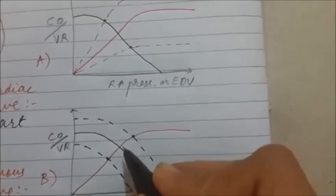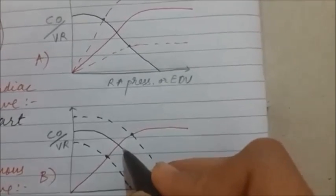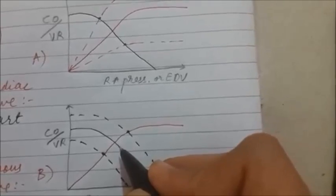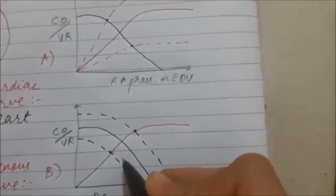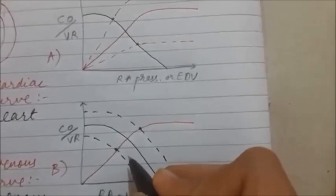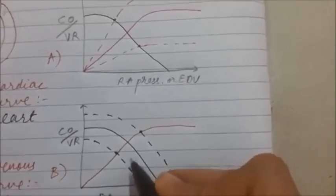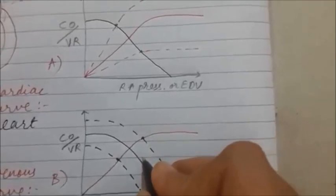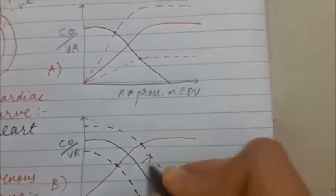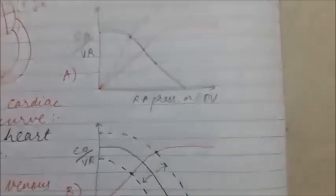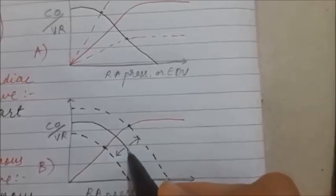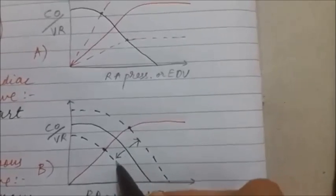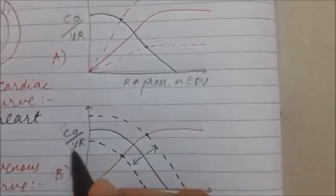When venous tone increases, venous return increases and the vascular function curve moves to the right. When there is venodilation, venous return decreases and the curve moves to the left. In case of venous constriction, the curve moves to the right. In case of venodilation, the curve moves to the left. In case of increased blood volume, like fluid infusion, the curve moves to the right. In case of acute hemorrhage, the curve moves to the left.